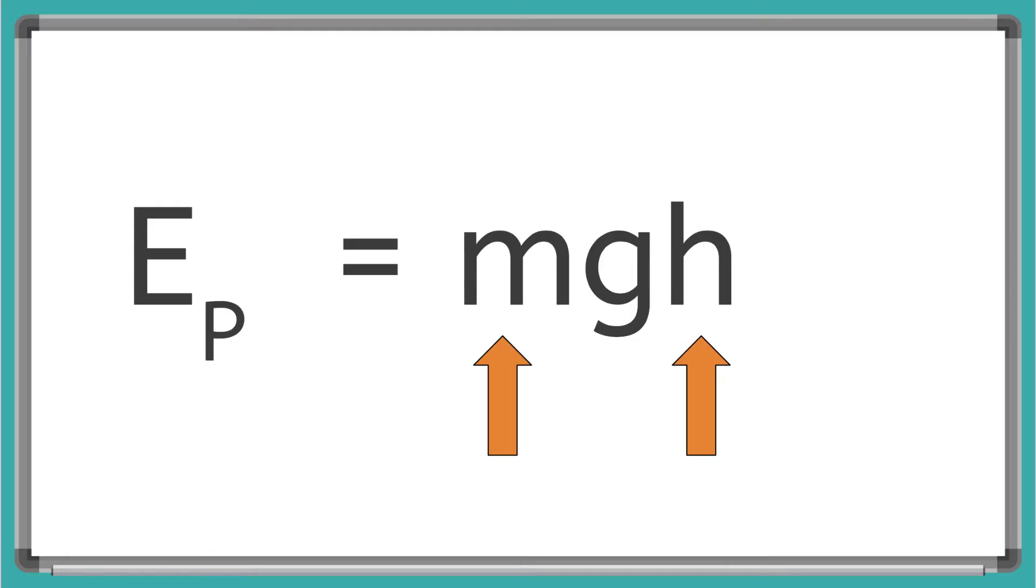And again, using those rules from algebra, we can see that as the mass or the height, the m or the h get bigger, the object will have more potential energy. And likewise, if the mass and the height get smaller, the object will have less potential energy.